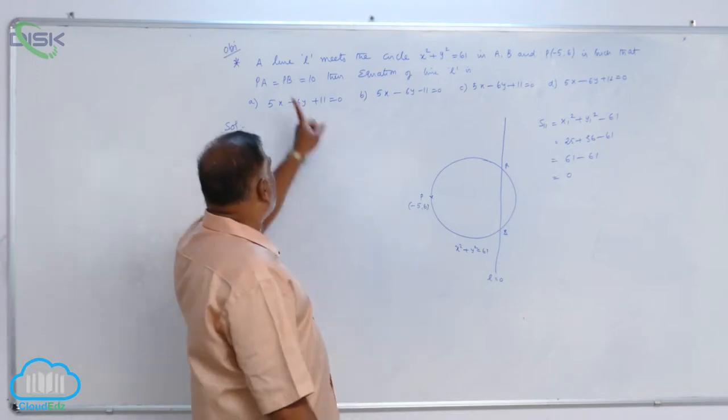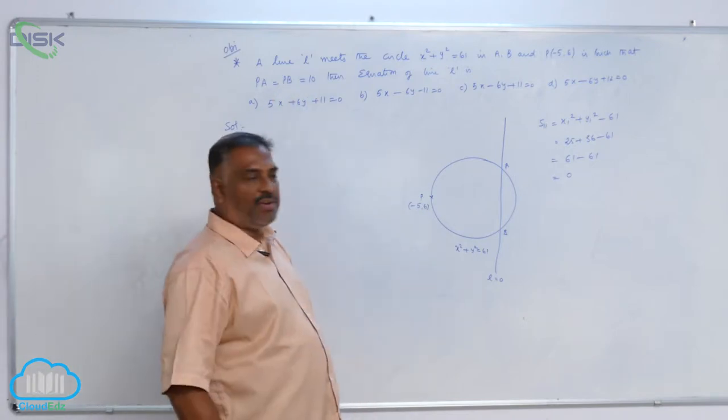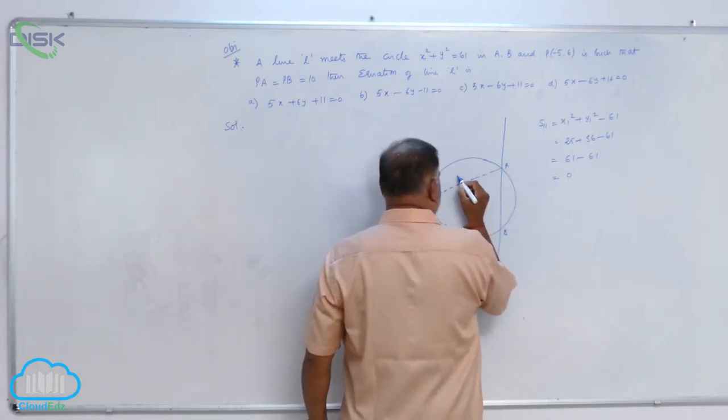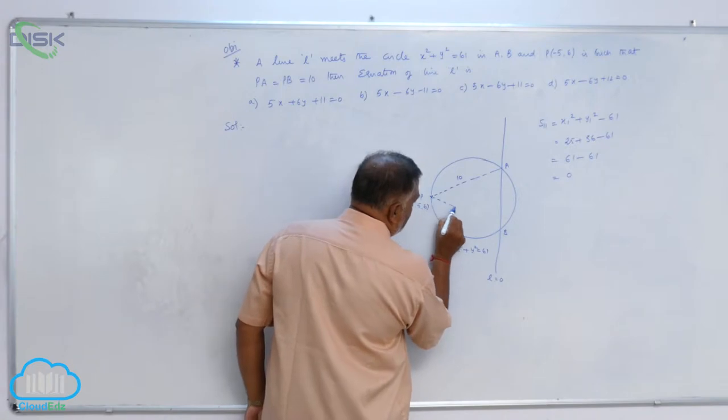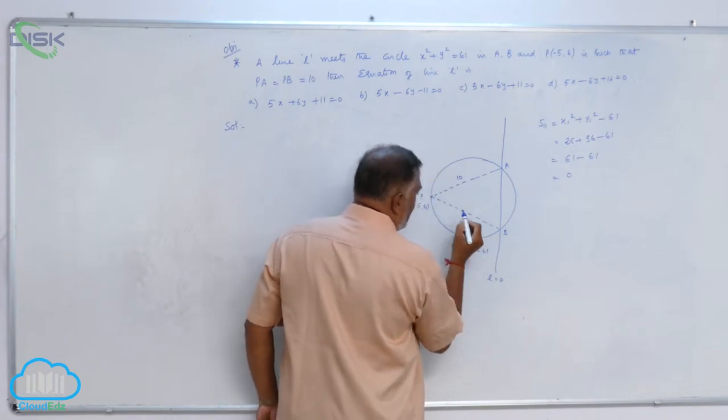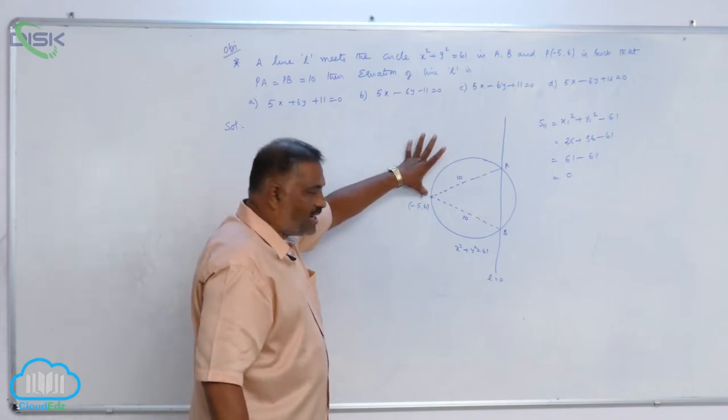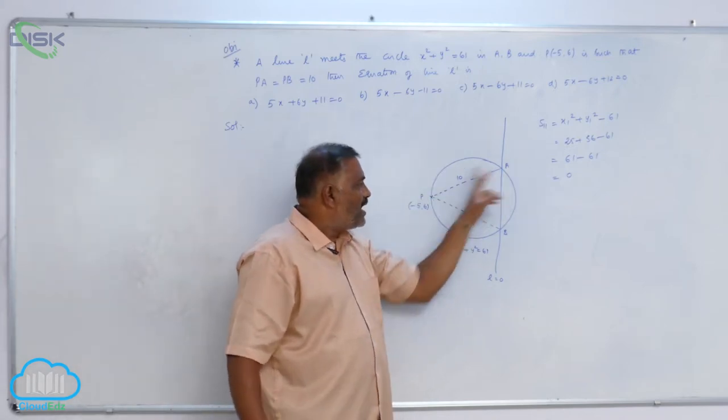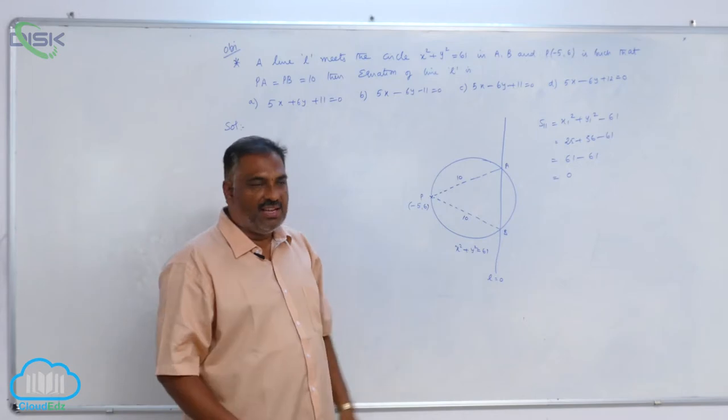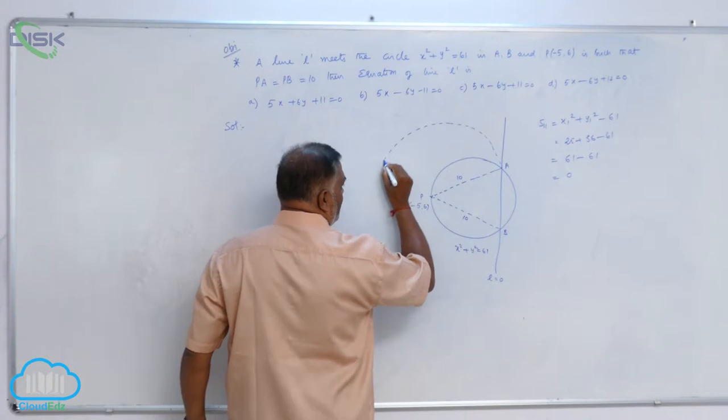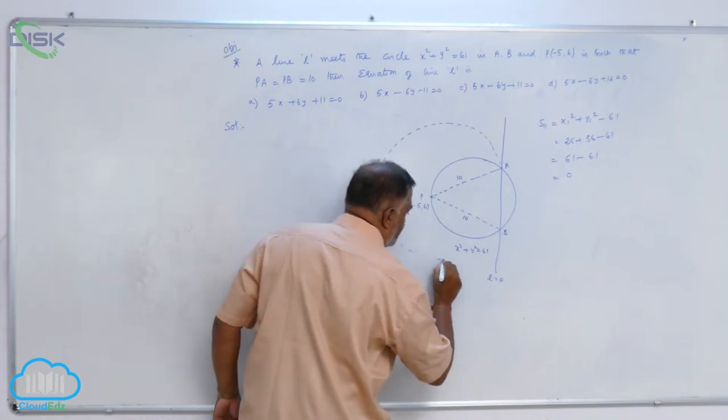Further, it is given that PA is equal to PB equal to 10. Join these two, this is 10. Join these two, this is also 10. You observe with PA as center and PA, PB as radius. If you draw a circle, I think this will be almost like this only, like this.